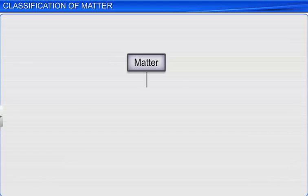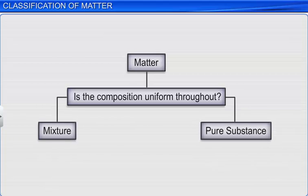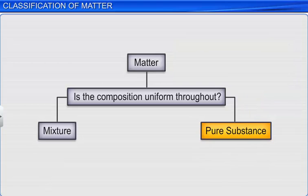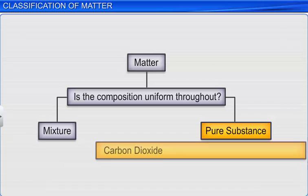Matter can be classified as pure substances and mixtures based on the chemical composition. Substances which contain only one kind of atoms or molecules are called pure substances. And in a pure substance, the composition of a substance is fixed. For example, carbon dioxide is a pure substance, which consists of only molecules of carbon dioxide, and it has carbon and oxygen in a fixed ratio.